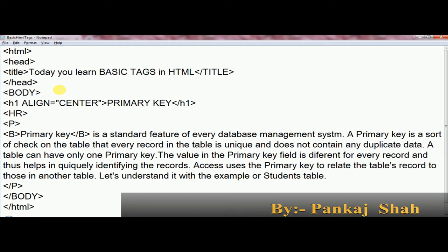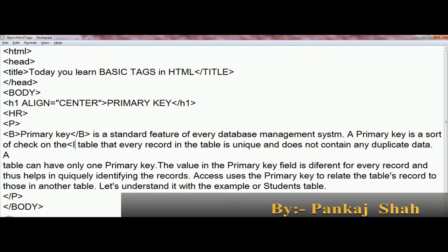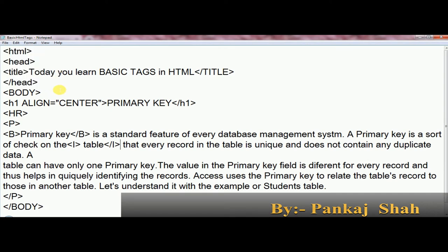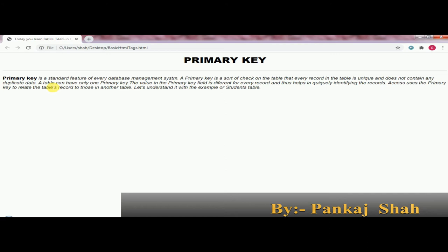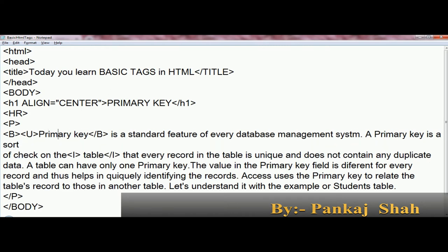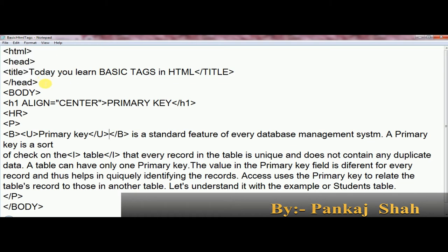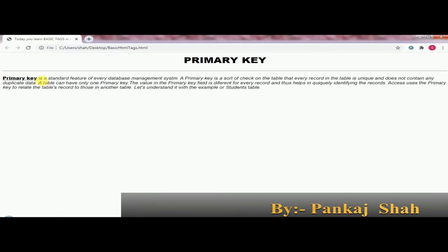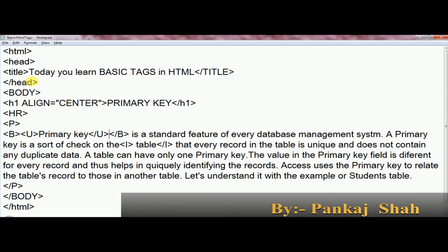Next topic is how to make words italic. Italic means a little bit slanted. We write that particular word inside the I tag — open I tag, close I tag. Save and refresh, and you can see it displayed in slanted style on the output screen. After that, next topic is how to make an underline. Sometimes we require underline to highlight a word, so we use the U tag — U is for underline. Open and close the tag, save, jump to the browser window, and you can see the underline below the primary keyword. These are some formatting tags.